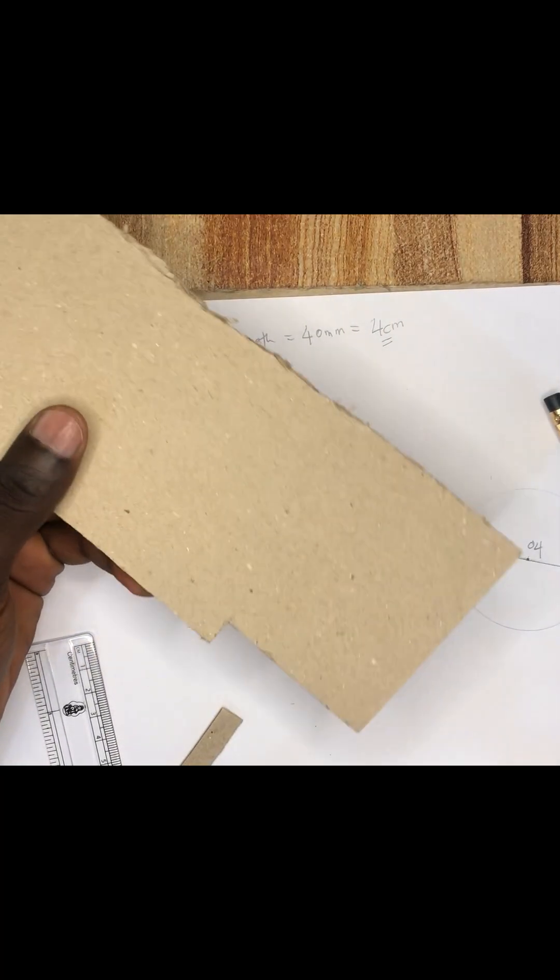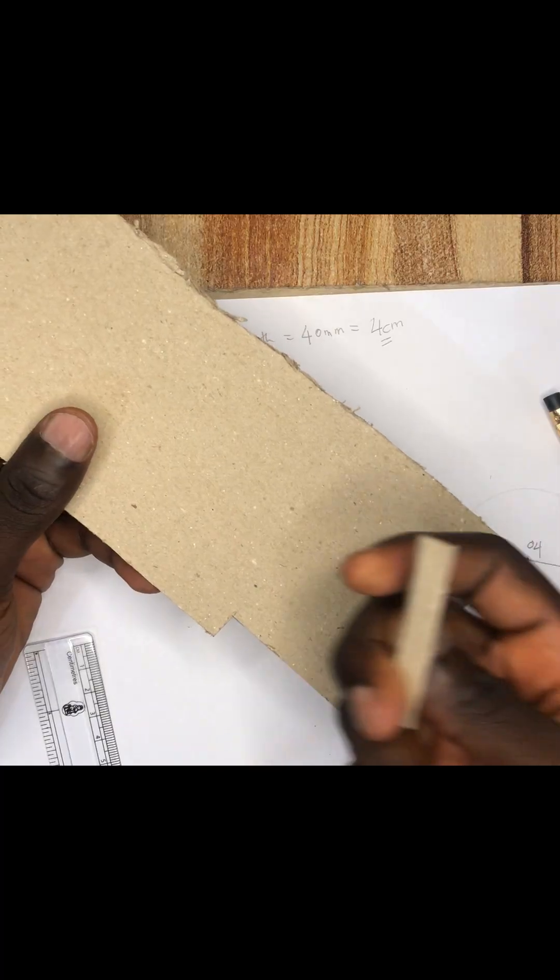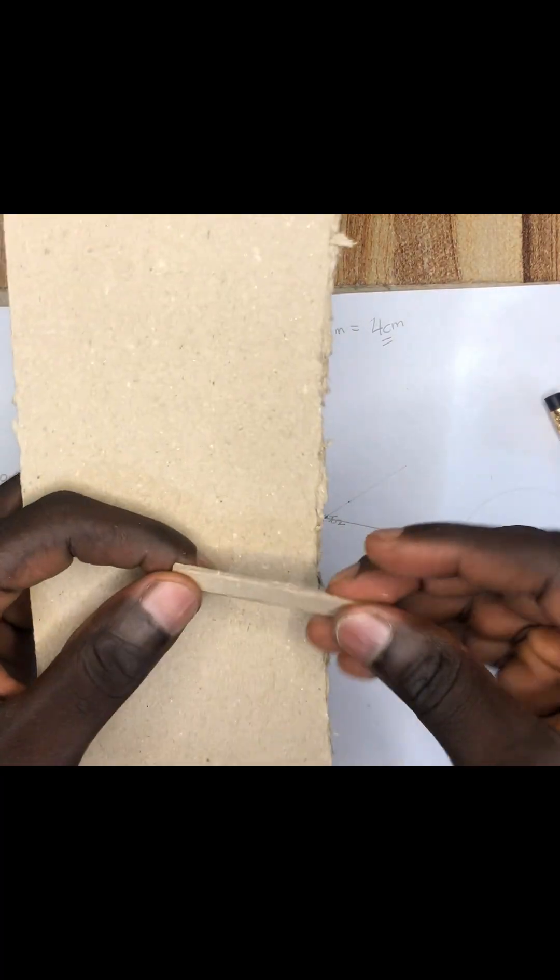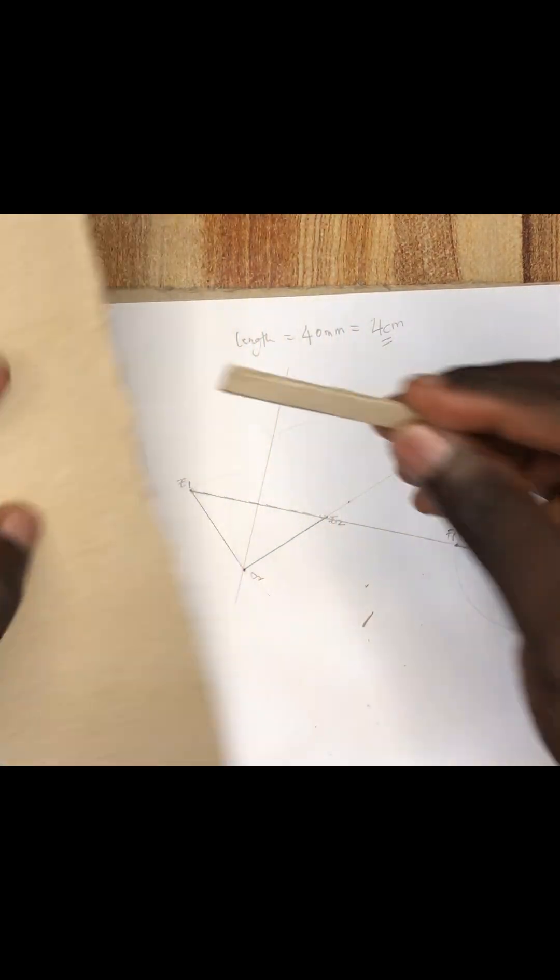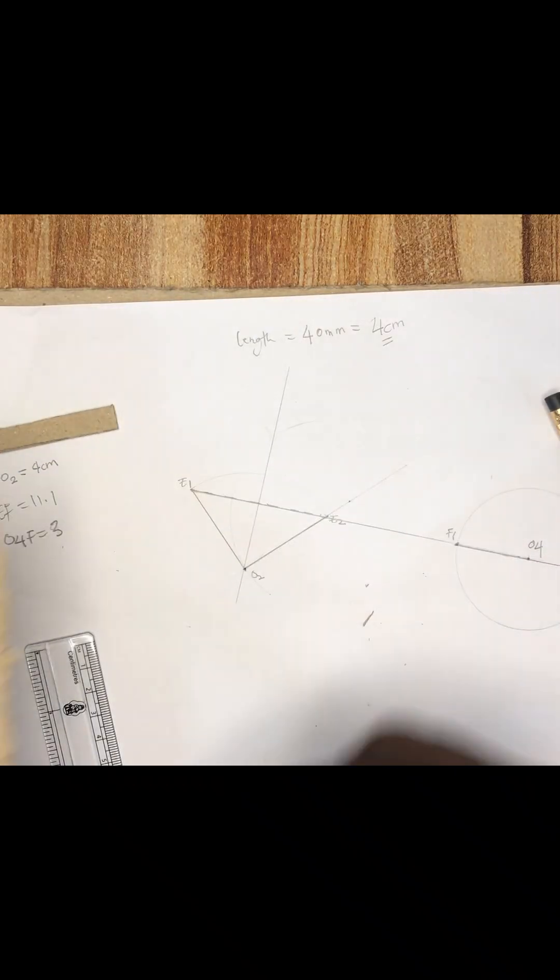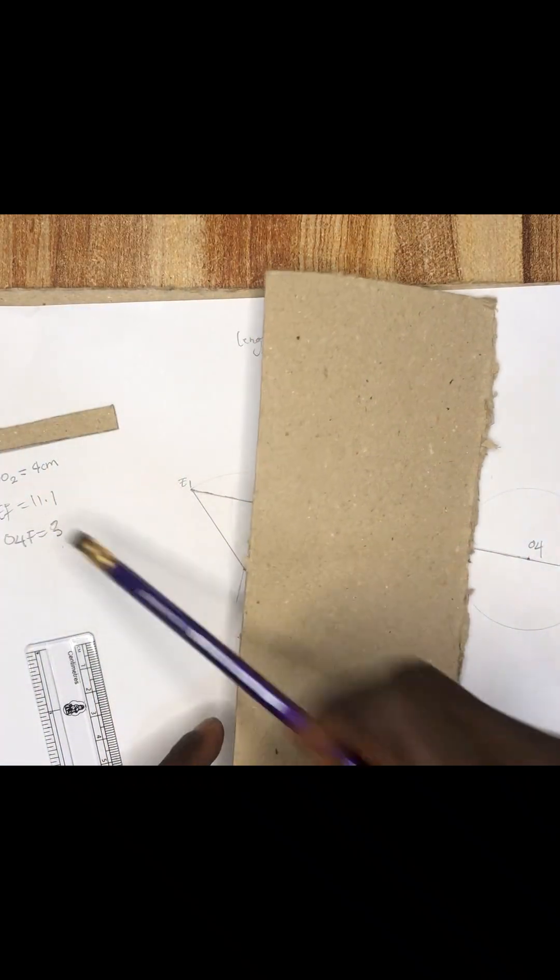Yeah, so this board is called straw board. Even if it's written cardboard, you don't go and say you're buying cardboard, you're buying straw board. So this is for the E-O2-O4.